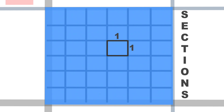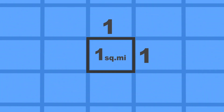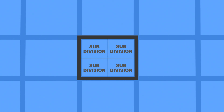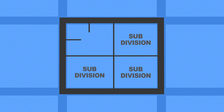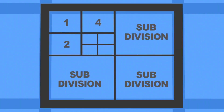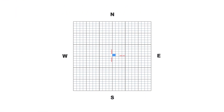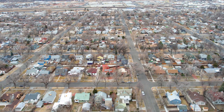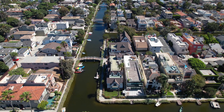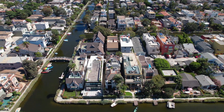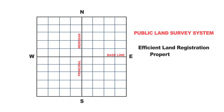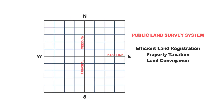Once the townships are established, the land within each township is further divided into smaller units called sections. A section is a square-shaped area measuring one mile on each side, covering an area of one square mile or 640 acres. These sections can be further divided into smaller subdivisions to facilitate land ownership and convenience. Common subdivisions include quarter sections, which divide a section into four equal parts of 160 acres each, and quarter-quarter sections, which divide a quarter section into four equal parts of 40 acres each. So when all these small square-shaped pieces of land add up, they form a huge mass of land creating the boxy state. The PLSS is a very efficient system, providing a consistent and uniform framework for identifying and describing land parcels, making it easier to determine land ownership and boundaries. It also allows for efficient land registration, property taxation, and land conveyance, as each parcel can be uniquely identified within the PLSS grid.